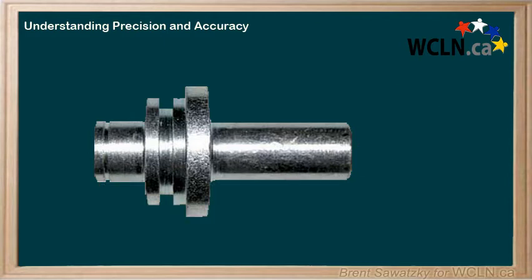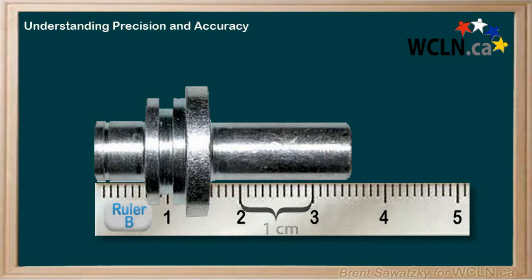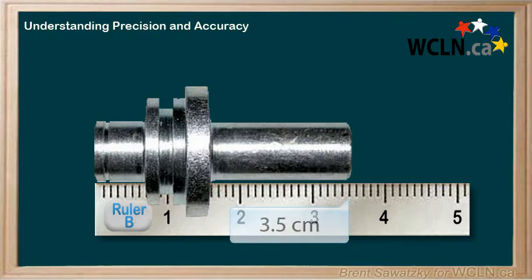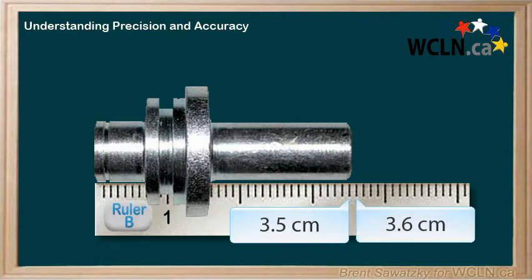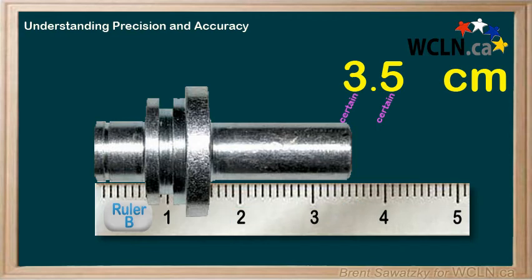Now let's switch our measuring tools — we'll pick ruler B. This ruler has a much higher precision; it's marked in one millimeter increments, or one tenth of a centimeter, which allows us to measure our part much more precisely. We can see that the part is definitely between 3.5 centimeters and 3.6 centimeters, so we start reporting 3.5 — these are our certain digits.